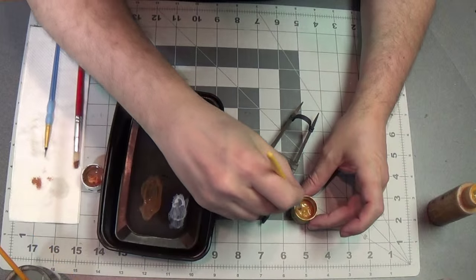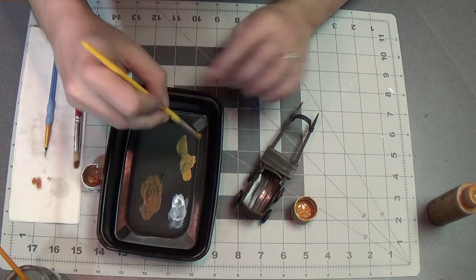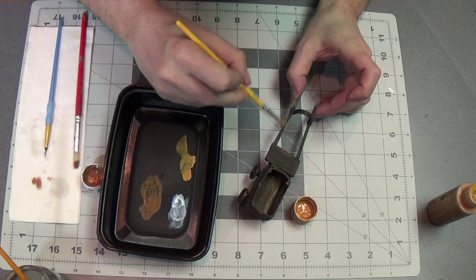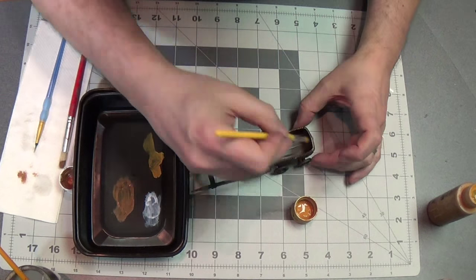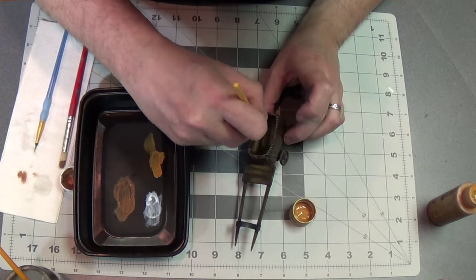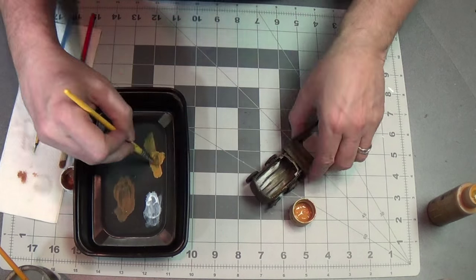Now I'm going to use a lighter brown and kind of highlight some of that wood. So I'll go along some edges and along some planks, the exterior, really start to pick out that detail.